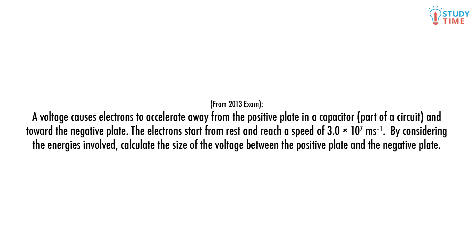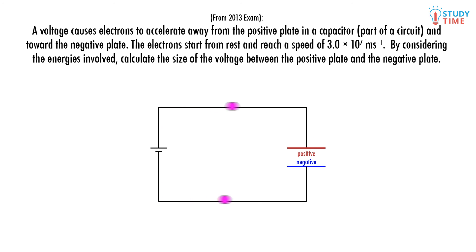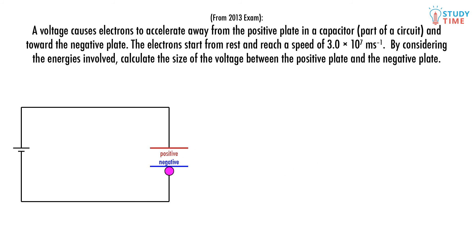A voltage causes electrons to accelerate away from the positive plate in a capacitor and towards the negative plate. The electrons start from rest and reach a speed of 3 times 10 to the 7 meters per second. By considering the energies involved, calculate the size of the voltage between the positive plate and the negative plate. The mass of an electron is 9.1 times 10 to the negative 31 kilograms, and the charge on an electron is negative 1.6 times 10 to the negative 19 coulombs.